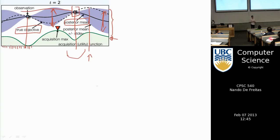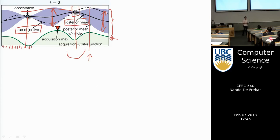If I wanted to just learn the function, I'd sample where variance is largest. But in this case I don't want to learn the function over the whole domain — I just want to know what the maximum is. So I want to be more aggressive and exploit. If I trade off exploring high-uncertainty areas and exploiting high-mean areas well, I'll find the optimum I seek.